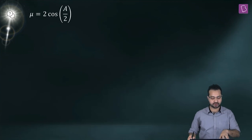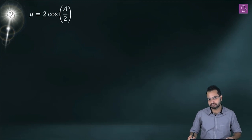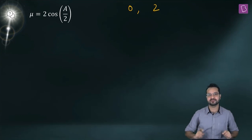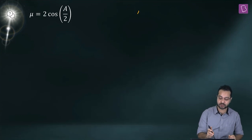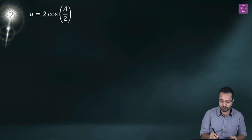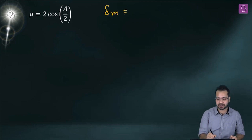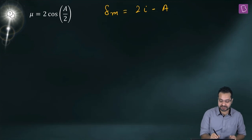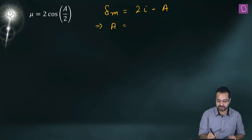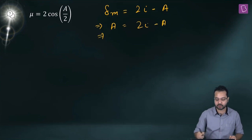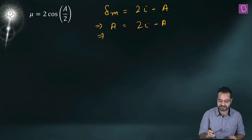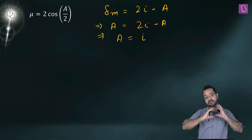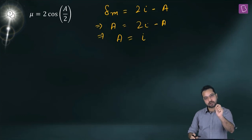We might be tempted to say that in the first quadrant cos(A/2) lies between 0 and 1, so μ lies between 0 and 2 — but we must remember other relationships too. In case of minimum deviation, δ_m = 2i − A. With δ_m = A, we get A = 2i − A, so 2A = 2i, meaning i = A. So A cannot assume all values independently; it must equal i.